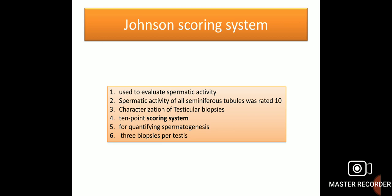What is the Johnson scoring system? The Johnson scoring system is used to evaluate spermatogenic activity of seminiferous tubules. Full spermatogenic activity is rated as 10. It is used for characterization of testicular biopsies. It is a 10-point scoring system used for quantifying spermatogenesis, and typically three biopsies per testis can be used.